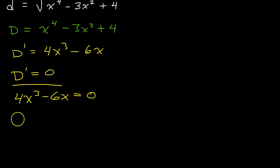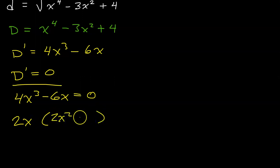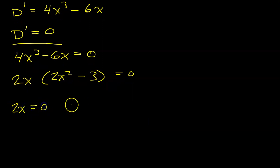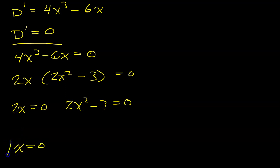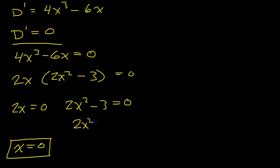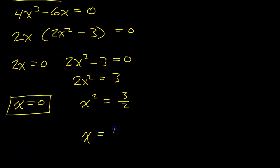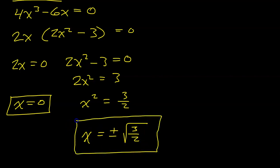There is a common factor here. Let's pull out 2x, which leaves 2x squared minus 3 equals 0. Using the zero product property, we have 2x equals 0, so x equals 0. And from 2x squared minus 3 equals 0, adding 3 to both sides gives 2x squared equals 3. Dividing by 2 gives x squared equals 3 over 2, and taking the square root gives x equals plus or minus the square root of 3 over 2. So altogether we have 3 critical numbers.